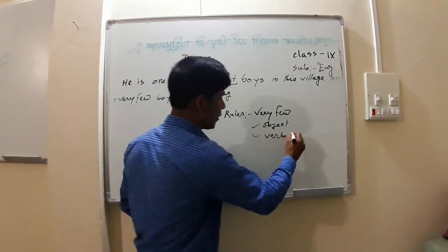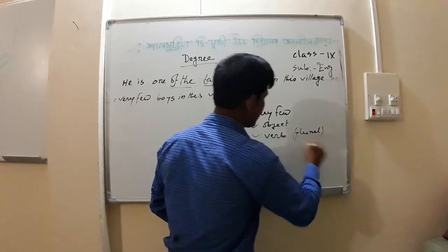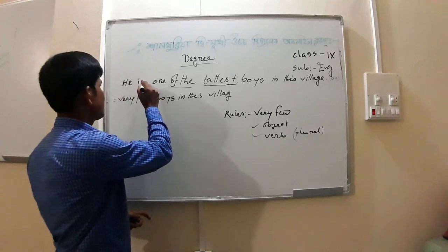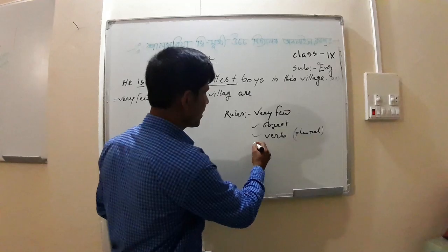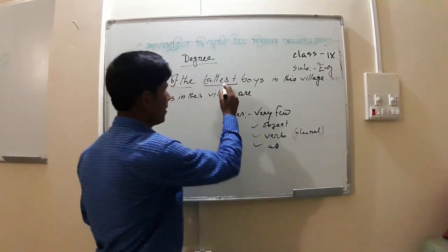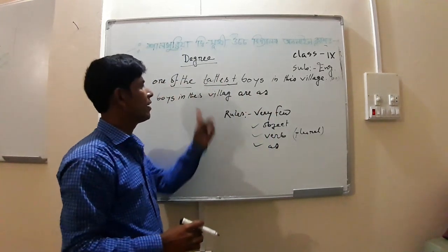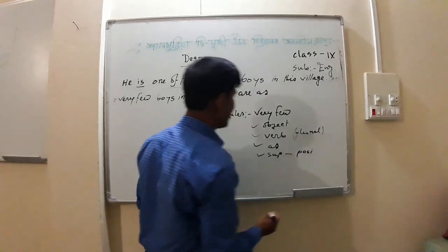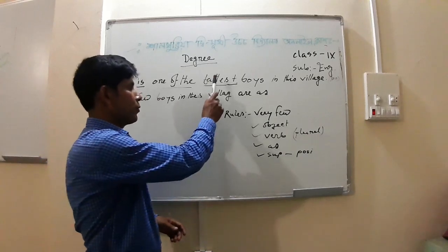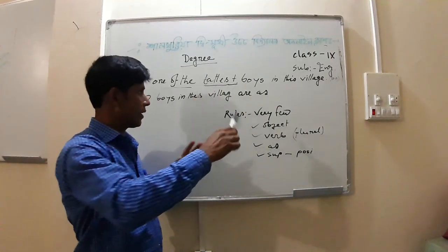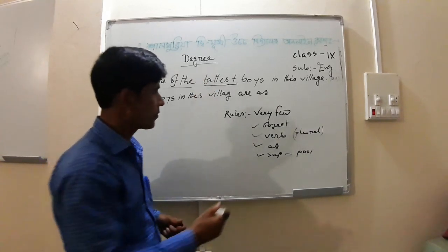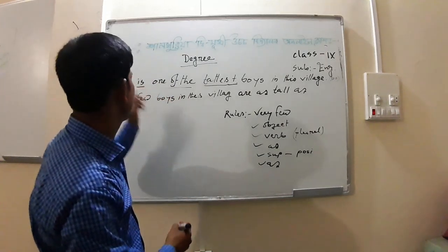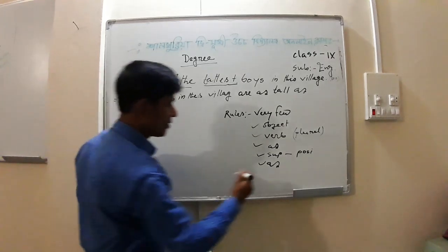The verb — v-e-r-b — will be plural because the subject is plural. If the subject is plural, the verb will also be plural. Now for the 'as...as' structure: you use 'as' then the positive form of the adjective — for example, 'tallest' converts to base form 'tall' — t-a-l-l — then 'as,' then the subject 'he.'